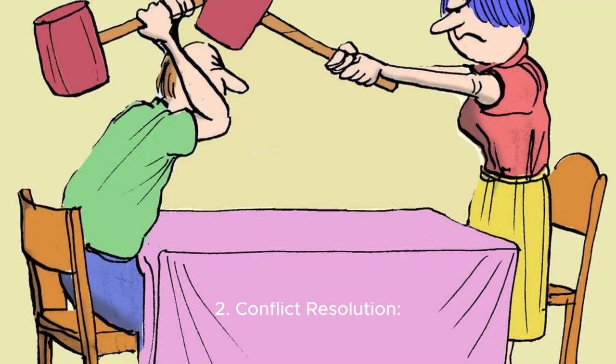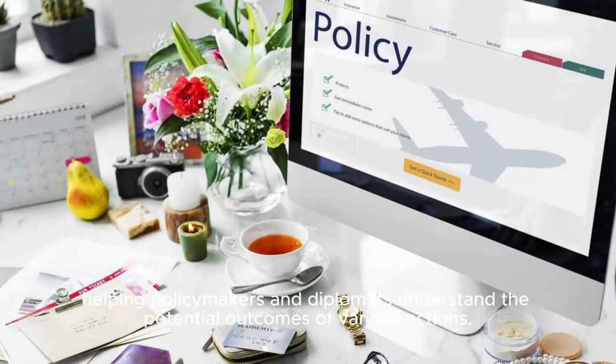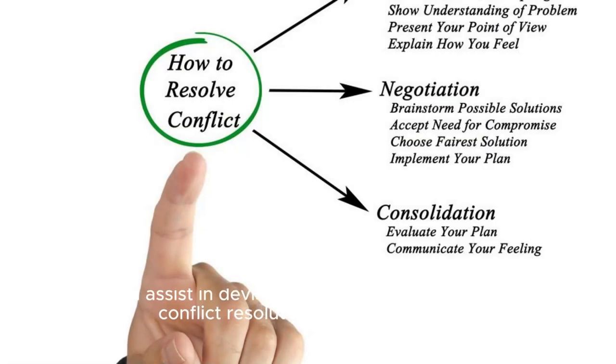Conflict Resolution: AI algorithms can be used to simulate and analyze different scenarios, helping policymakers and diplomats understand the potential outcomes of various actions. This can assist in devising more effective strategies for conflict resolution and negotiation.